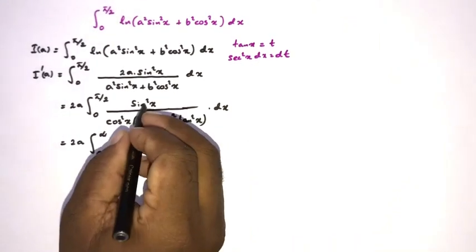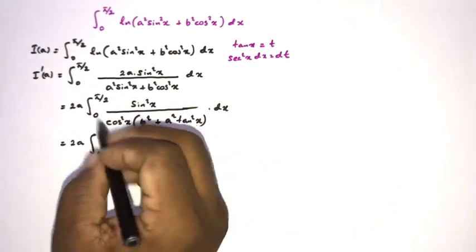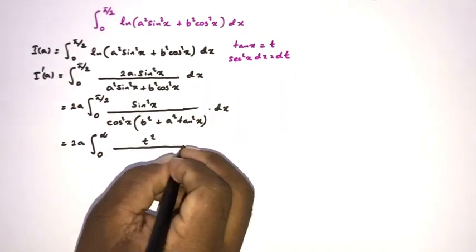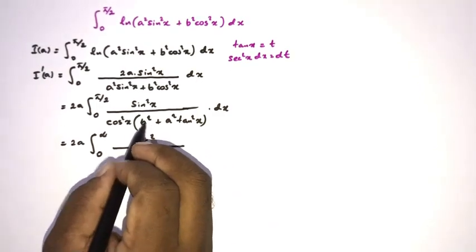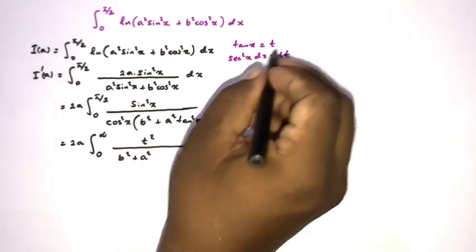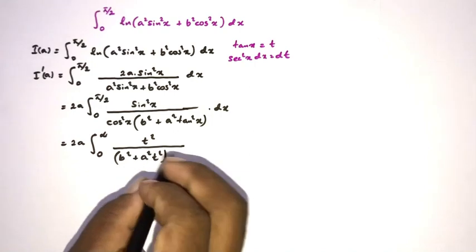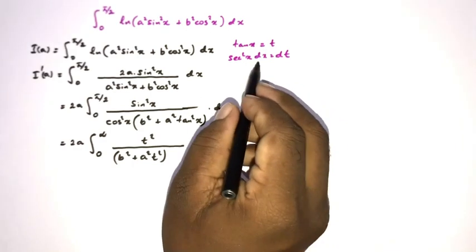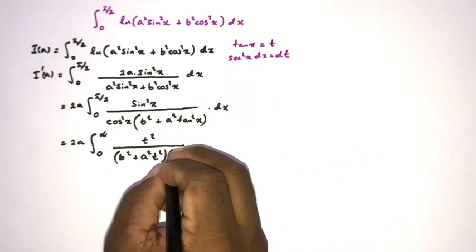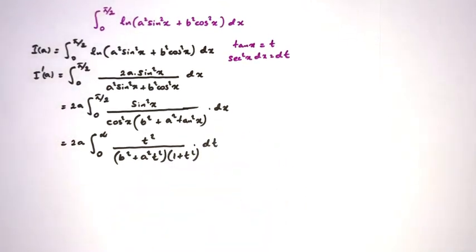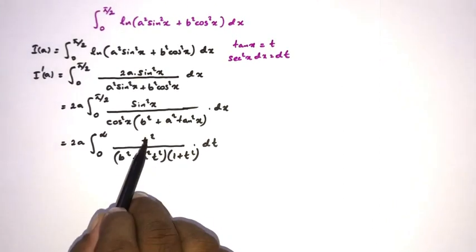After substitution, sin²x/cos²x = tan²x = t², and dx = dt/sec²x = dt/(1 + t²). So the integrand becomes t²/(b² + a²t²) · dt/(1 + t²), giving 2a·∫₀^∞ t² / [(b² + a²t²)(1 + t²)] dt. We now apply partial fraction decomposition.